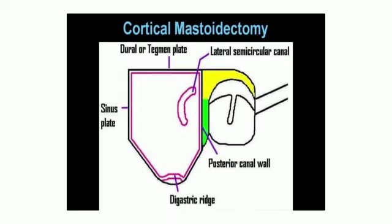Cortical or simple or complete mastoidectomy, which is also called the Schwartz operation. Here the surgeon opens the mastoid bone, removes the infected air cells, and drains the middle ear.